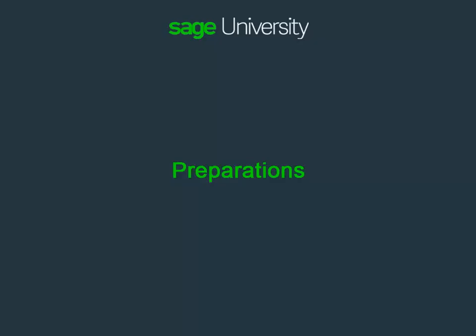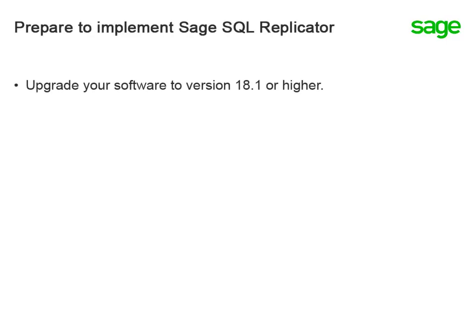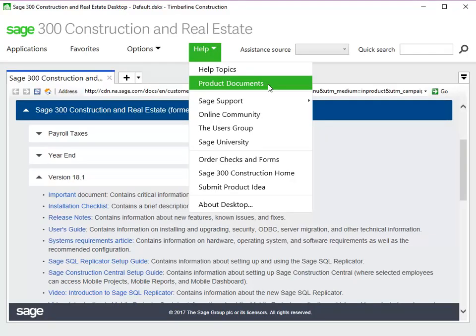Next, let's examine how to prepare for implementing Sage SQL Replicator. First, you'll need to upgrade your software to version 18.1 or higher. And, as with any upgrade, you should review the release documents beforehand. The easiest way to get to these documents is through your Sage desktop. Go to Help, Product Documents.